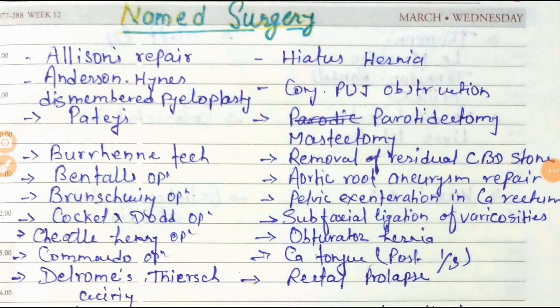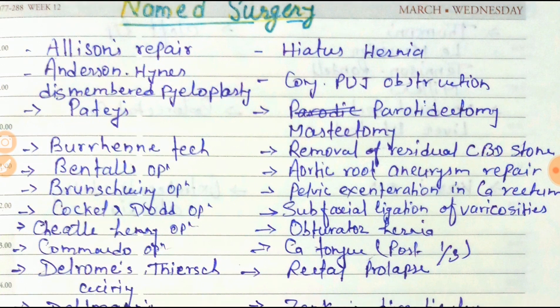First of all, starting with named surgeries: in case of hiatus hernia, the main operation is Allison's repair. Next, for congenital UPJ obstruction, it is Anderson-Hynes dismembered pyeloplasty.